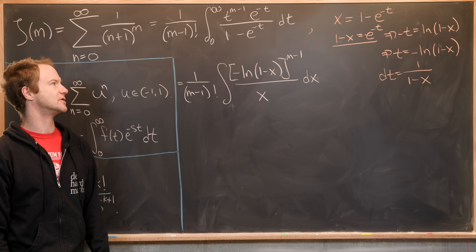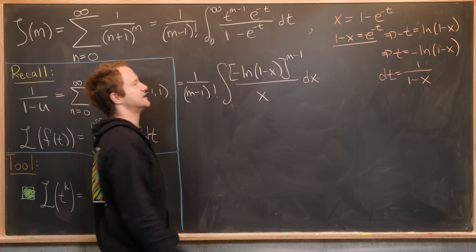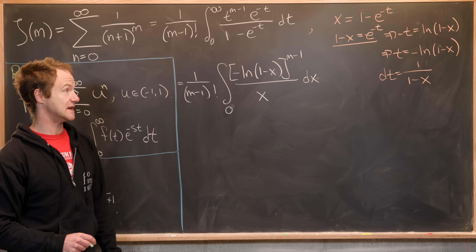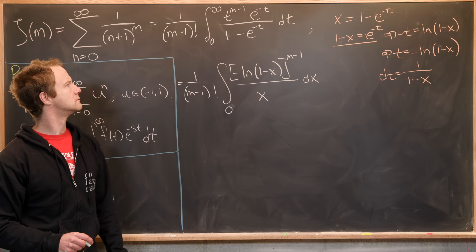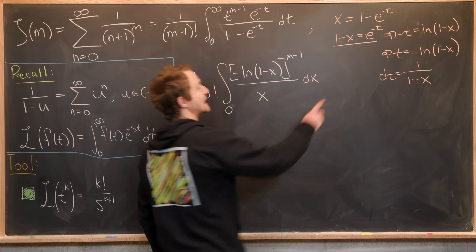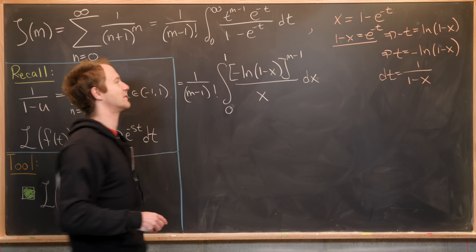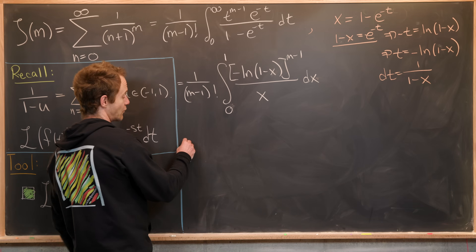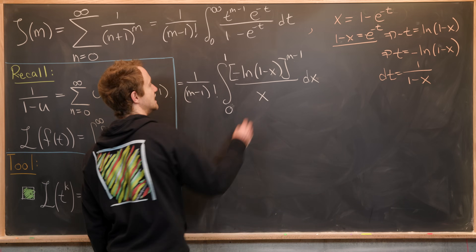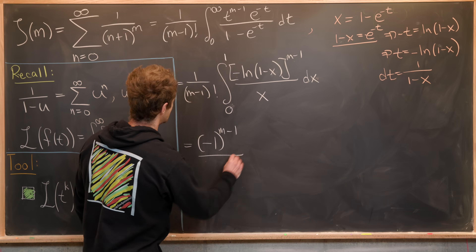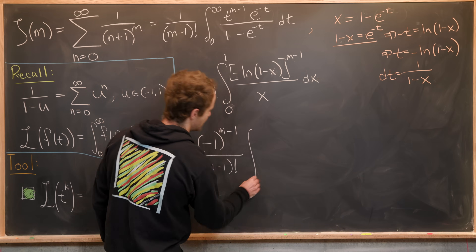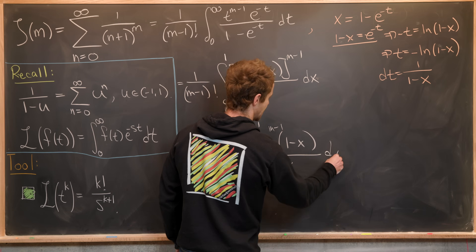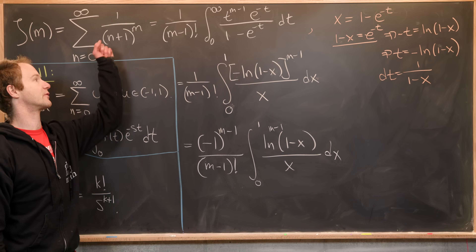Substituting everything in gives 1 over m minus 1 factorial times the integral from 0 to 1 of (minus ln(1 minus x)) to the m minus 1 over x dx. We can bring the minus 1 to the m minus 1 out front, giving minus 1 to the m minus 1 over m minus 1 factorial, times the integral from 0 to 1 of ln(1 minus x) to the m minus 1 over x dx. That's another nice integral identity for the Riemann zeta function.